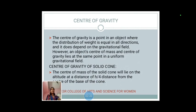Center of gravity: The center of gravity is a point in an object where the distribution of weight is equal in all directions and is thus dependent on the gravitational field. An object's center of mass and center of gravity lie at the same point in a uniform gravitational field. Center of gravity of a solid cone: The center of mass of the solid cone lies on the altitude at a distance of one-quarter of the altitude from the center of the base of the cone.